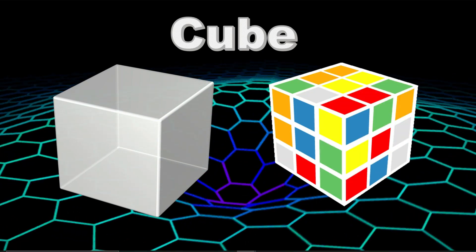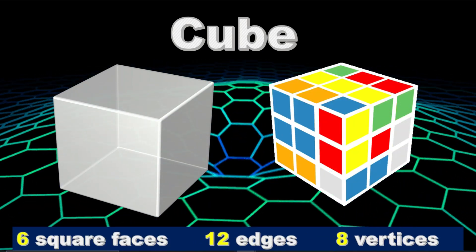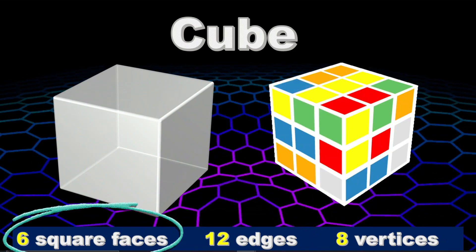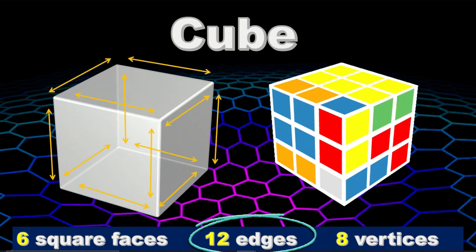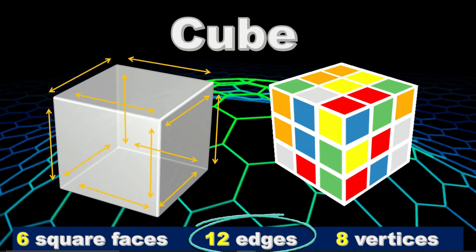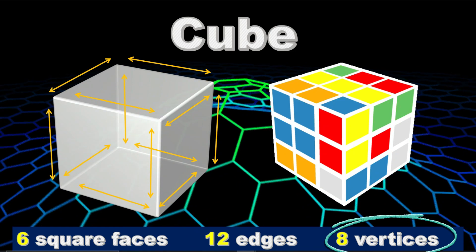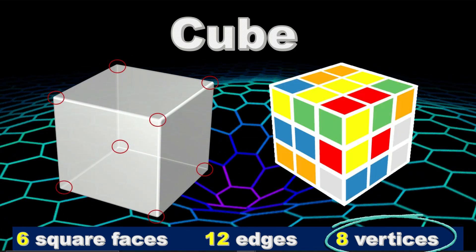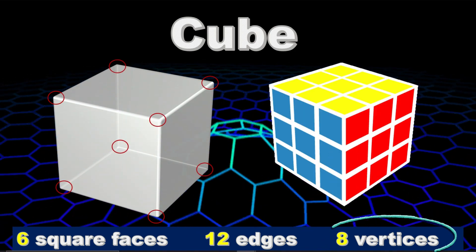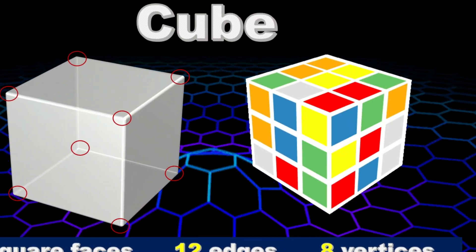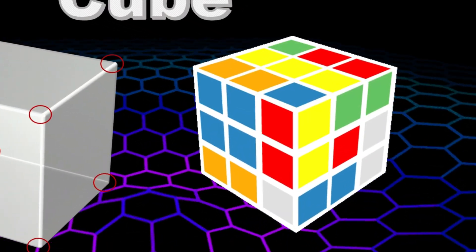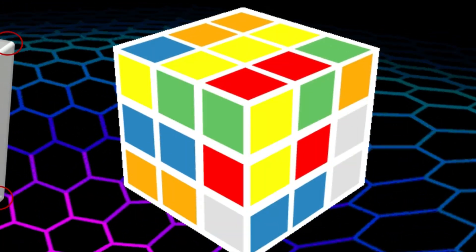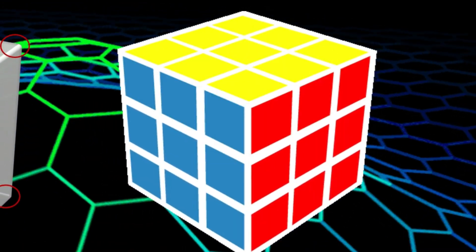Cube. Cube has six square faces, twelve edges, and eight vertices. An example of a cube is a Rubik's Cube. Do you want to learn how to play a Rubik's Cube?